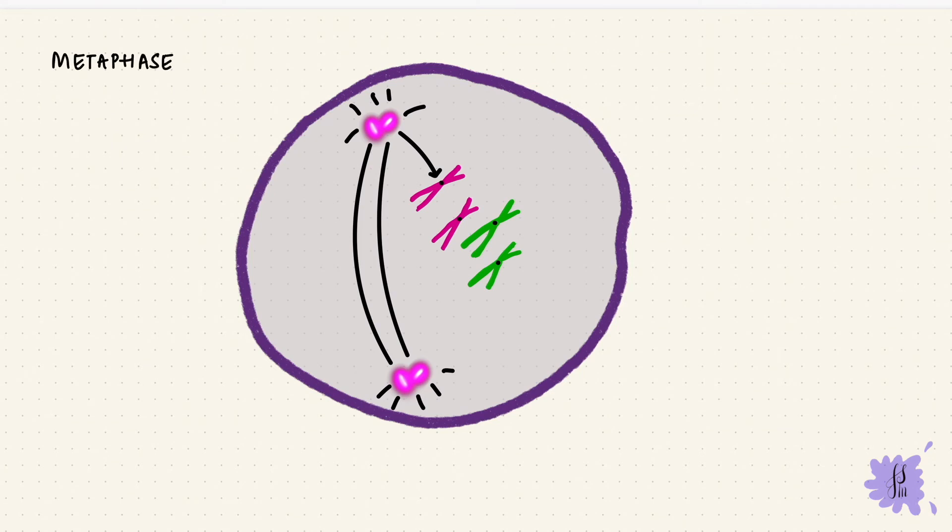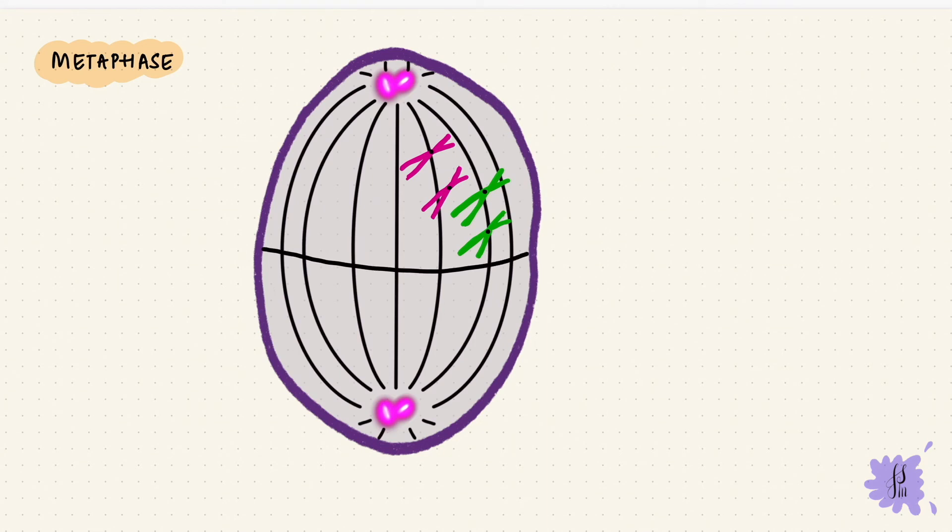During the metaphase, the two asters still keep moving towards the poles of the cells. The spindles align the chromatids along this plane which is at the center of the cell. This is the equatorial plate.